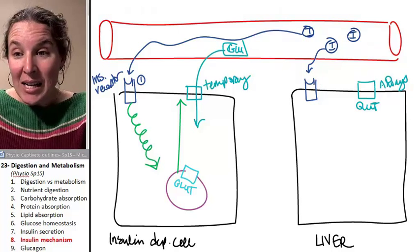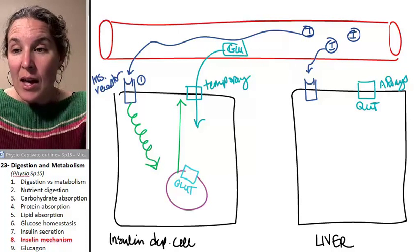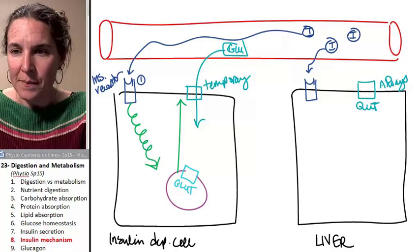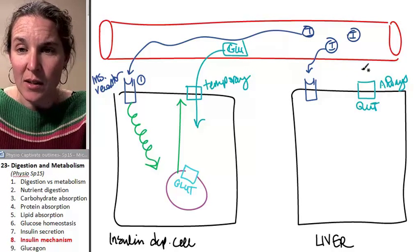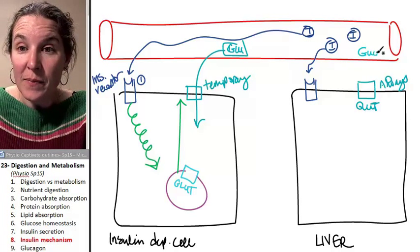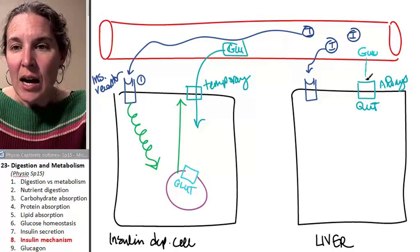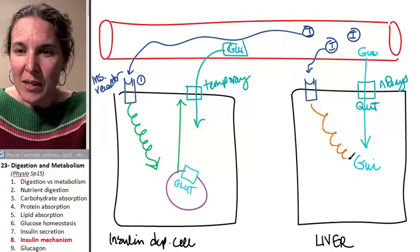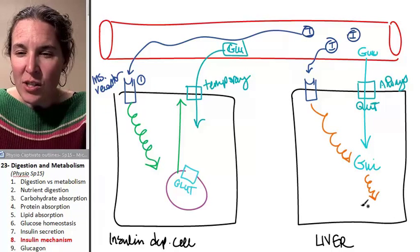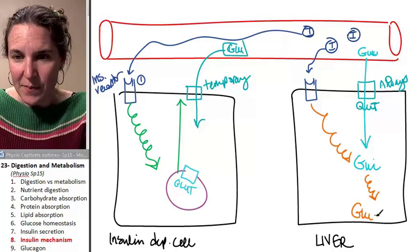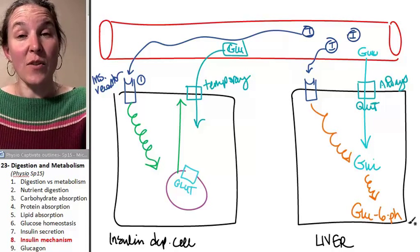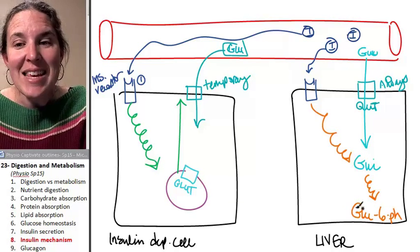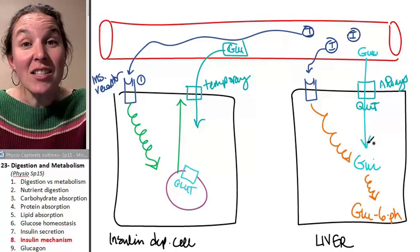Insulin comes in and binds and we're going to show that glucose is going to come in. Insulin binding allows glucose to be turned into something different. It turns into glucose 6-phosphate. The important thing is that it turns into something else. This maintains a concentration gradient.